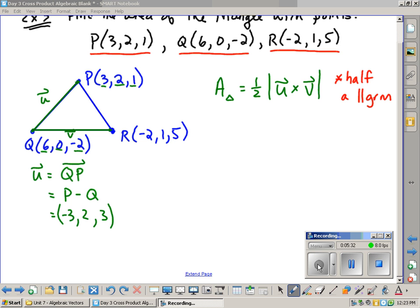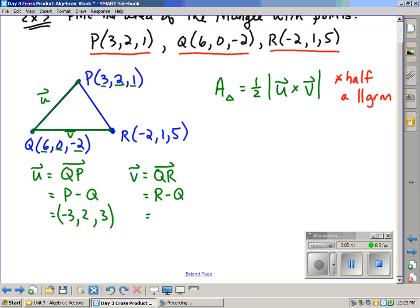So very quickly, we can also define V. V goes from Q to R, which is R minus Q. So I'm just going to subtract the x's, the y's, and the z's. So negative 2 minus 6 is negative 8. 1 minus 0 is 1. And 5 minus minus 2 is 7. And we end up with negative 8, 1, and 7.